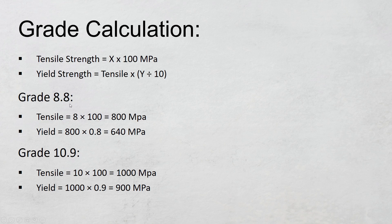Similarly, let's say I will take the second number. This second number is also 8. First I will divide this number by 10, so I will get 0.8. And then I will multiply this 0.8 by 800. 0.8 into 800 will give me 640 MPa. So the yield strength of this 8.8 grade bolt is 640 MPa.